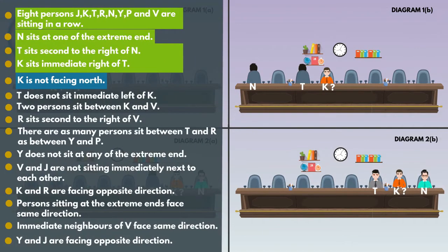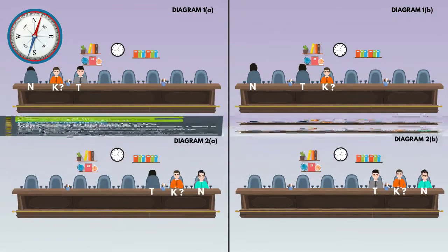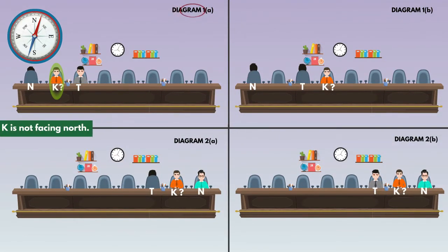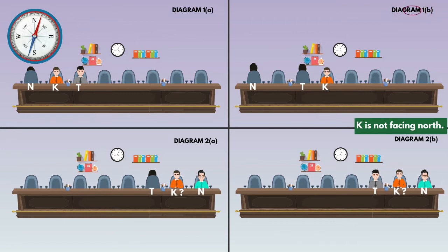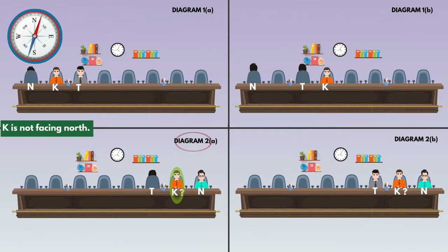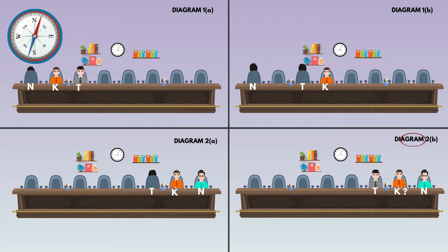Go to the next statement: K is not facing north. It means K faces south direction in all diagrams — diagram 1A, diagram 1B, diagram 2A, and diagram 2B. In each case, K is confirmed to be facing south.